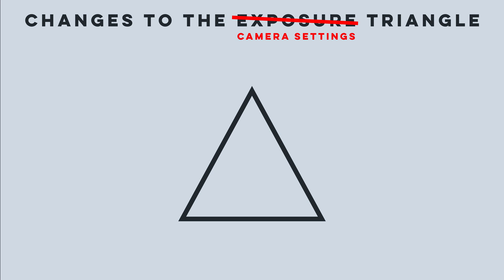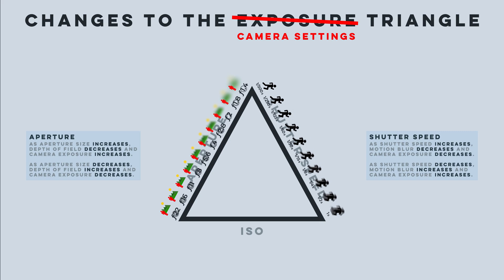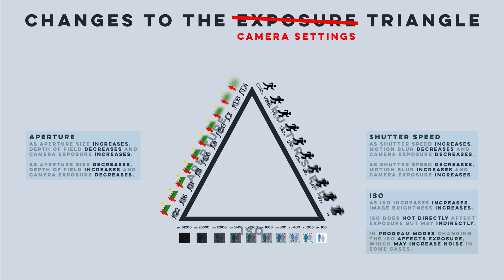On our new camera settings triangle, we will keep shutter speed, aperture, and ISO. On the shutter speed side, as we lengthen the shutter speed, we increase exposure, and motion blur also increases. For aperture, wider apertures let in more light and thus lead to a higher exposure, and wider apertures also decrease depth of field, which is useful if you want to separate your subject from the background. Since ISO does not directly affect exposure, we will not use that terminology, but instead say that increasing ISO increases brightness. All of this is technically correct.